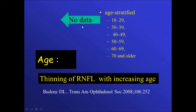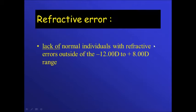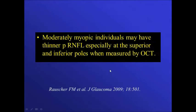There is no normative data below the age of 18 years, and as the patient gets older, the retinal nerve fiber layer normally gets thinner. For refractive error, there is no normative data for errors higher than minus 12 or higher than plus 8 diopters; outside this range, comparison is unreliable.